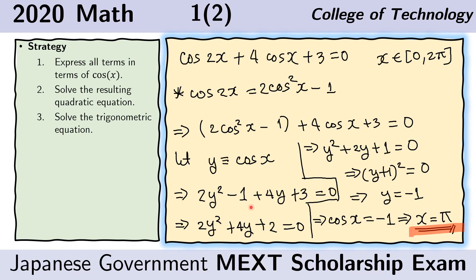So this bit becomes this bit. This one becomes this. And minus 1 plus 3 becomes 2. And we still have 0 here. Now we just divide everything by 2 so that we have smaller numbers. And we get this.